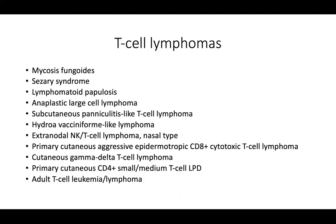For this lecture we will jump right into cutaneous T-cell lymphomas. T-cell lymphomas is a difficult group of diseases — you really have to look at the clinical and histopathologic presentation, the progression, and the timeline of response to treatment to gather the best picture of what is going on with the patient. There are a lot of different entities, and you really have to understand what you're looking for not only clinically but also on pathology to make the diagnosis. It can be very tricky if you don't have multiple time points and multiple data points to put together clinical progression and behavior. You really have to look at the big picture over time.